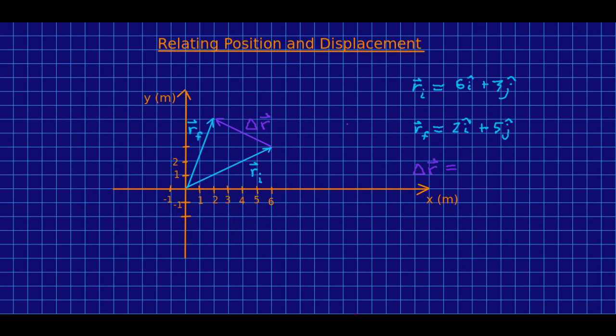Look at the components of this delta r. You can just read them right off. It has an x component of negative four and it has a y component of plus two. Notice if you take the final minus the initial x components, two minus six, oh look you get negative four. And if you take the final minus the initial y components you get two.